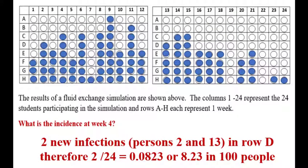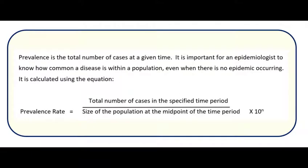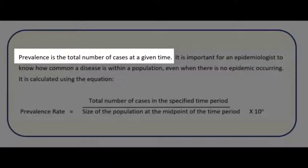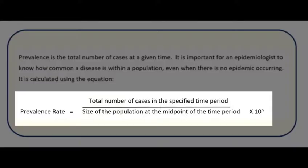By calculating the incidence for the outbreak, an epidemiologist can quickly determine if a disease is still spreading. Another really useful number is prevalence. Prevalence is the total number of cases during a given time period in that given population. It's important for an epidemiologist to know how common a disease is within a population. The prevalence rate is the total number of cases during that specified time divided by the size of the population.